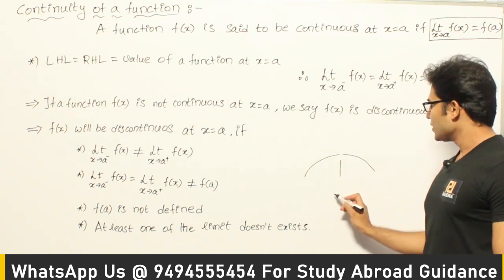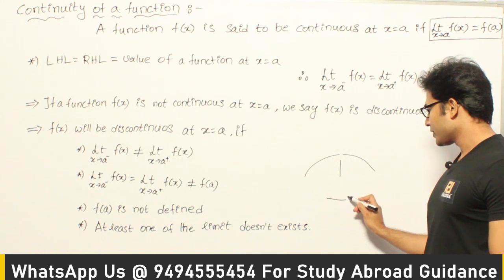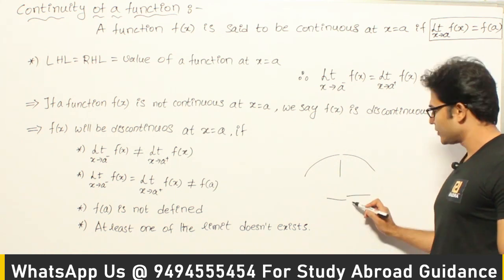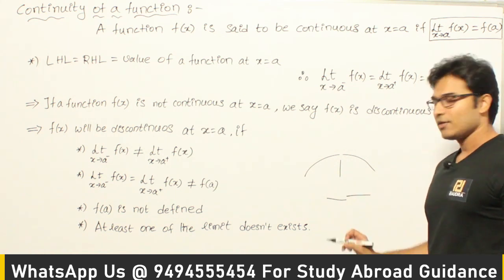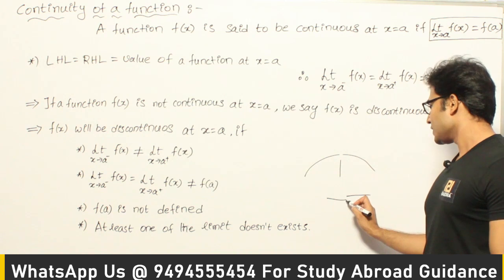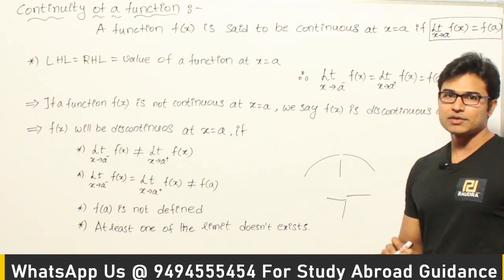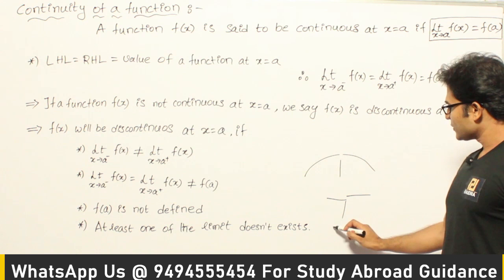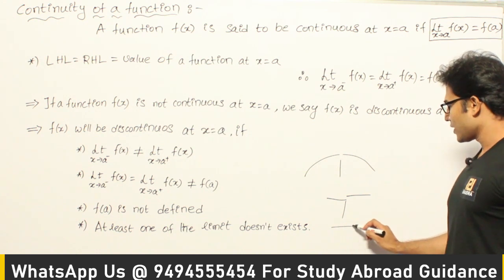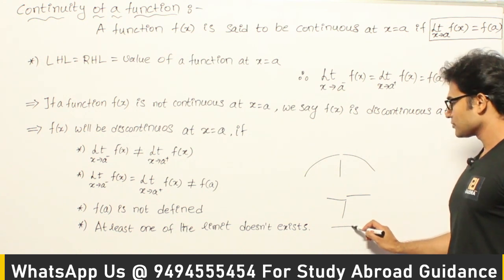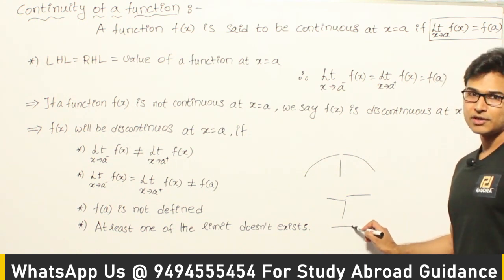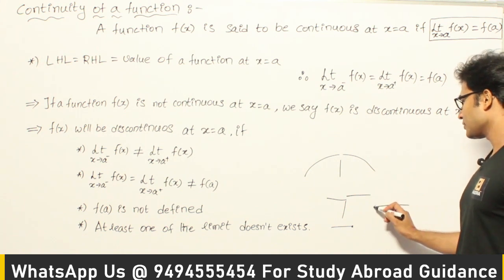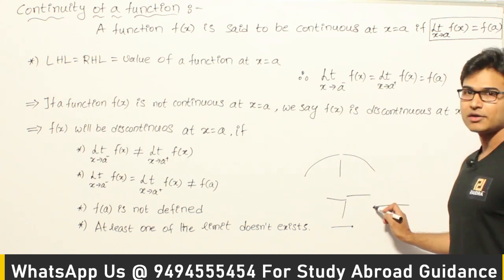Or if a function is suddenly jumping at a point — from here it suddenly jumped here — then at that point it is not continuous. Or sometimes the function has just ended there, then it is not continuous at that point. Or if a function has just begun there, then it is also not continuous.